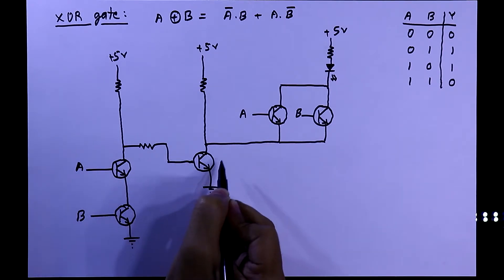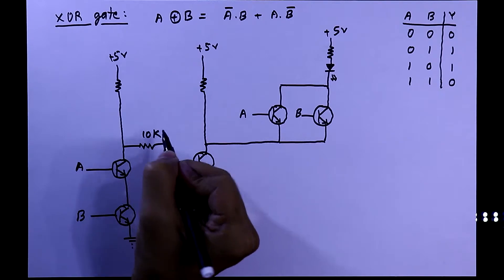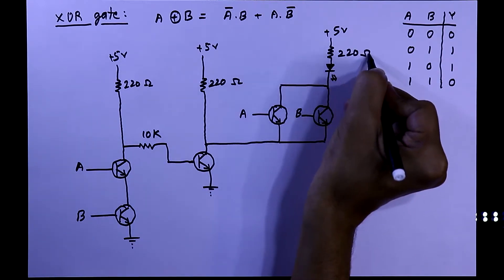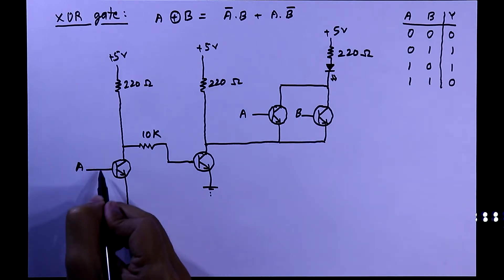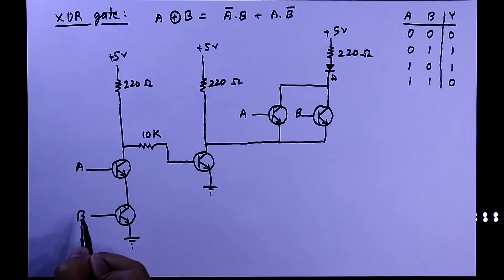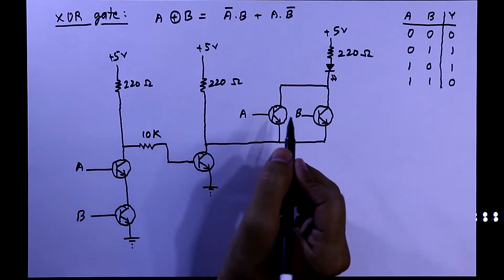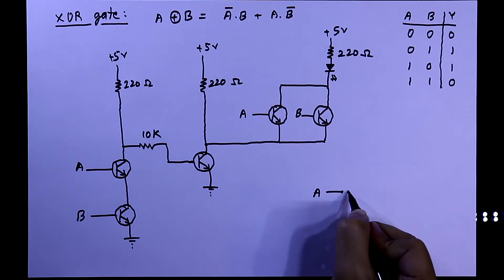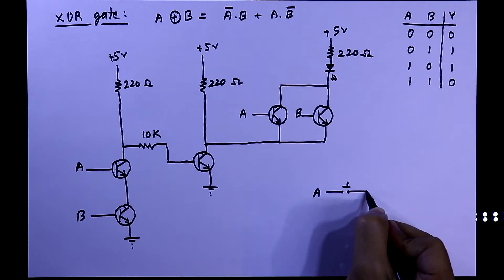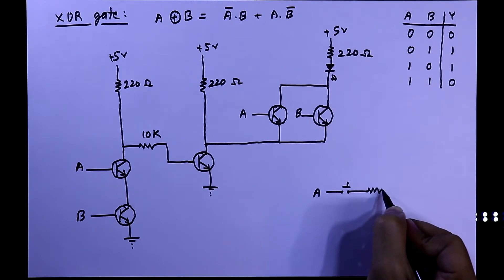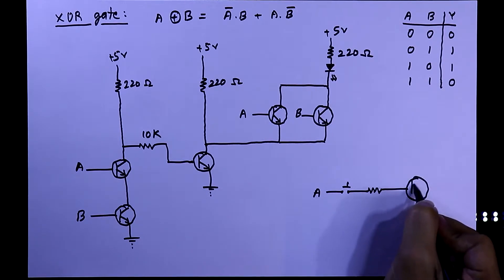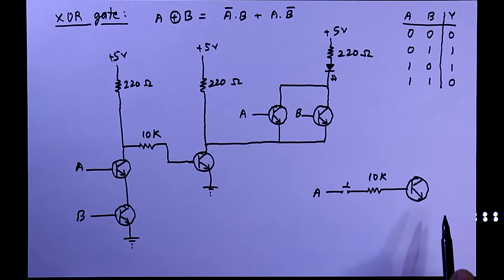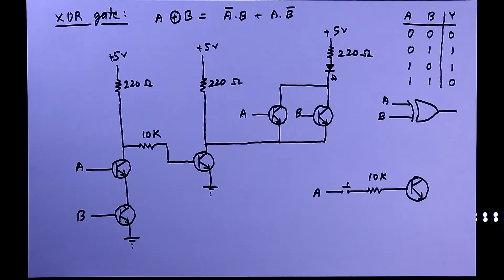The resistor values are: 10 kilo-ohms, 220 ohms, 220 ohms, and 220 ohms. In between the base of the transistor and the input we have to connect a 10 kilo-ohm resistor and a switch. So the path is: switch, then 10 kilo-ohm resistor, then the base of the transistor. This is the circuit — you can use any NPN transistor; I'm using the BC548.